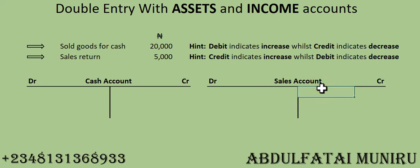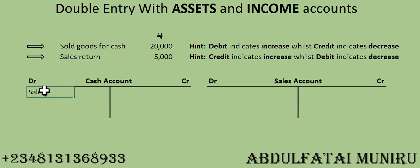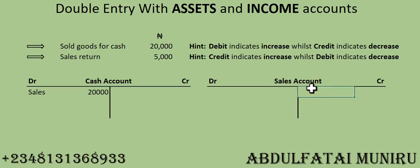We have two accounts stated. When recording in the second account, we make use of the name of the other account we are recording against. Here I'll put 'Sales' under the cash account for 20,000 Naira. For the next entry, we come to the credit side of the income account and indicate it as 'Cash' for 20,000 Naira.